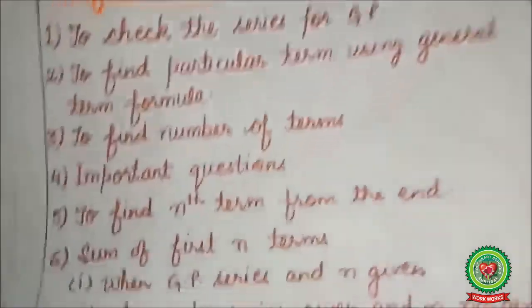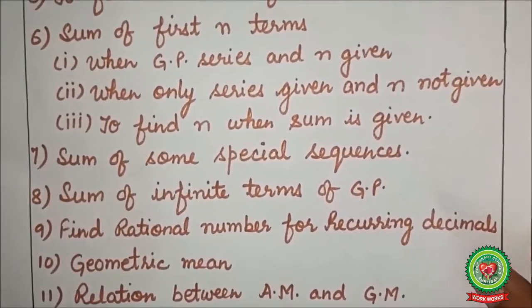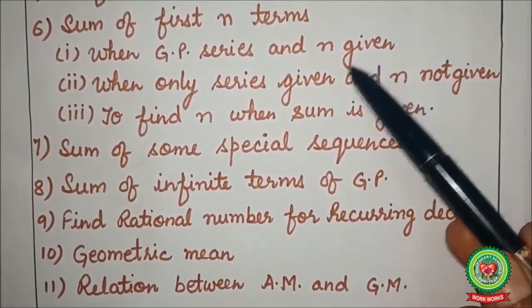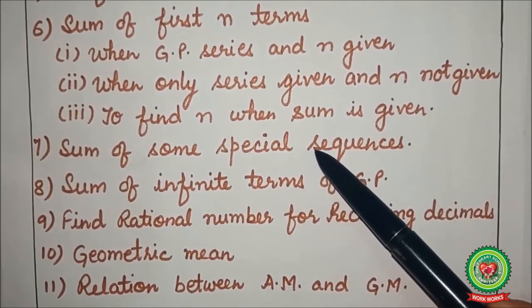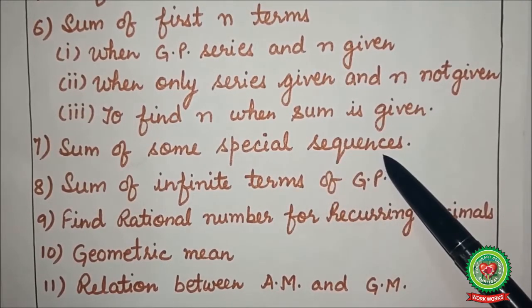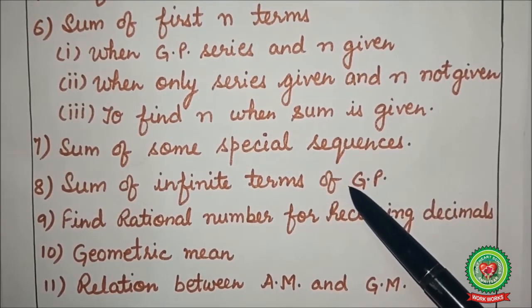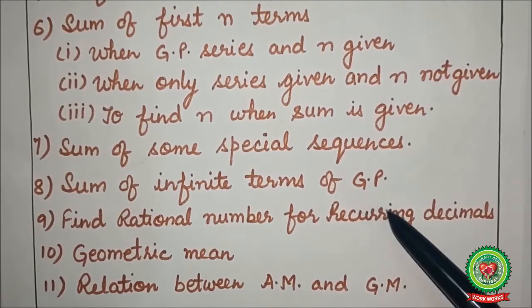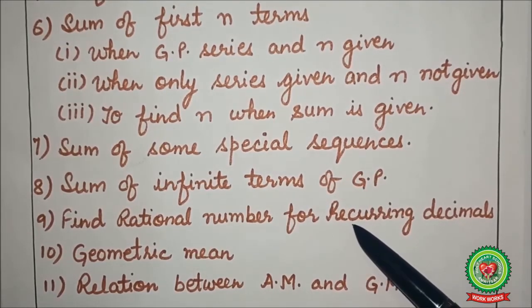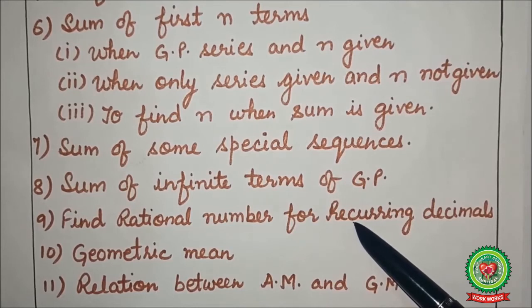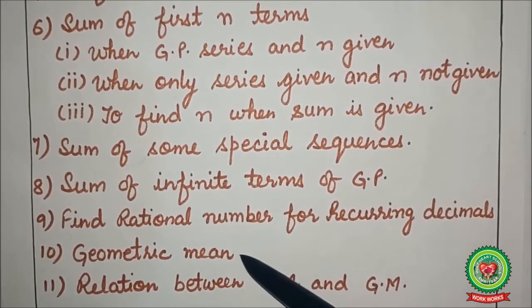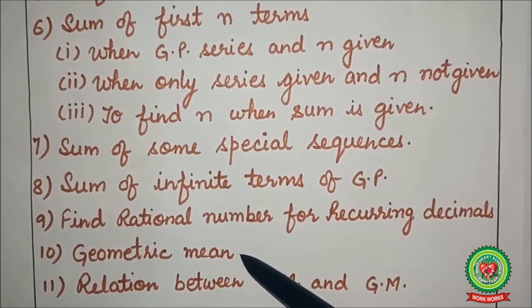Then sixth, to find the sum of first n terms. Seven, sum of some special sequences. Then eighth, sum of infinite terms of GP. Ninth, we will find a rational number for recurring decimals using GP. Then we will do the geometric mean.